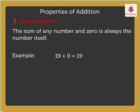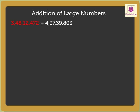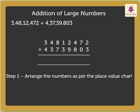Now, let us learn how to add large numbers. Let us add 3 crore 48 lakh 12,472 plus 4 crore 37,39,803. To add large numbers, we follow the same steps as we do for small numbers: Step 1 — Arrange the numbers as per the place value chart. Step 2 —